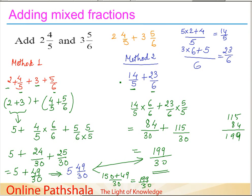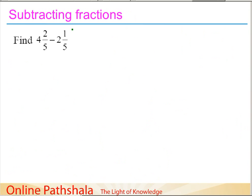Now let us take another example involving subtraction of mixed fractions. We need to subtract 4 and 2/5 minus 2 and 1/5. Using Method 1, we consider the whole parts and fraction parts separately. We can write this as 4 minus 2 for the whole parts, and 2/5 minus 1/5 for the fraction parts.